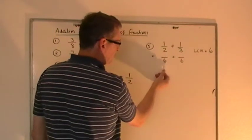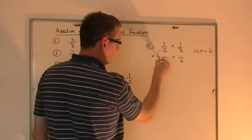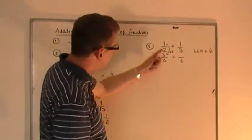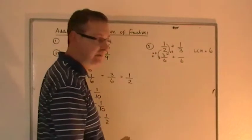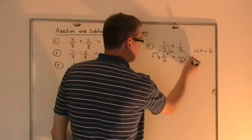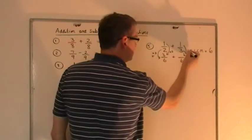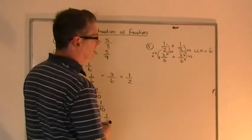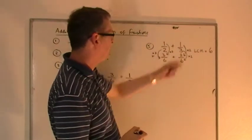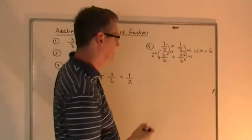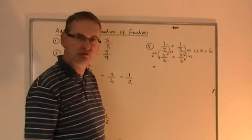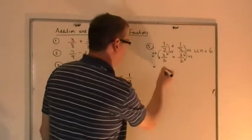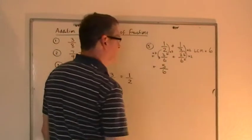So the first one here, to change the 2 into a 6 I've had to treble it. So what I'm going to do is treble the top line. So 1 times 3 is 3. So I'm changing the half into 3 sixths. Plus, to change the 3 into the 6 I double it. So I need to double the top line. So the 1 gets multiplied by 2. You get 2. So the sum instead of a half plus a third becomes 3 sixths plus 2 sixths. Because they're both now over 6 it's really easy. 3 cats plus 2 cats, 5 cats. 3 sixths plus 2 sixths, 5 sixths. There you go. There's the answer.